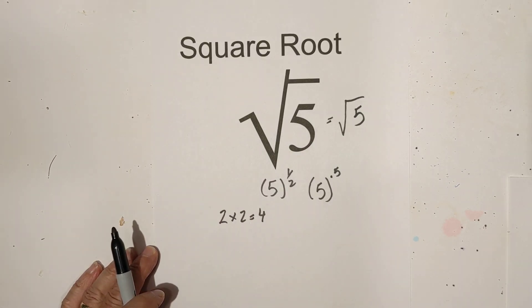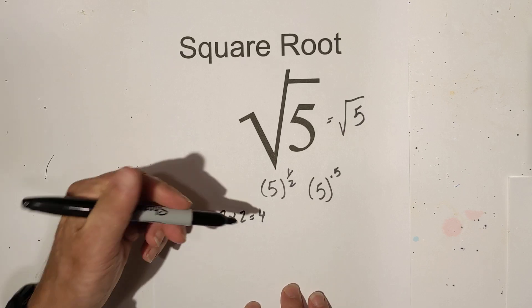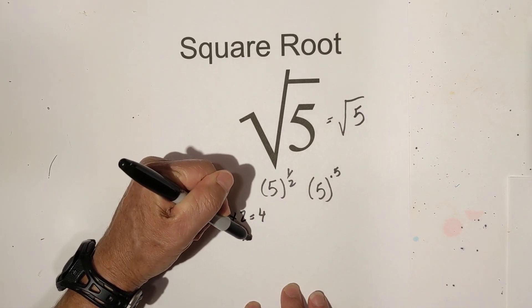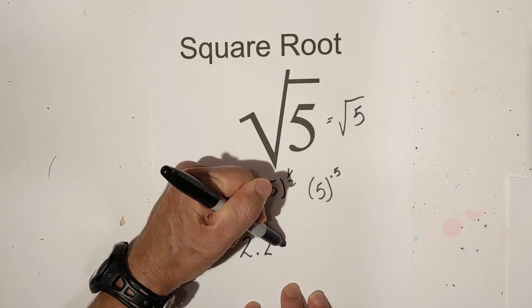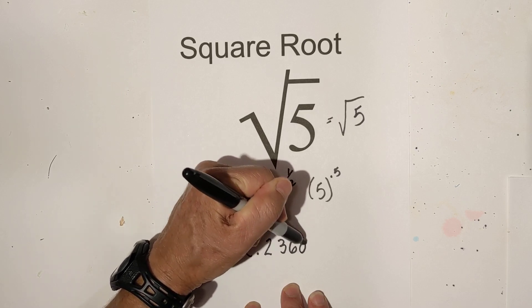What two numbers multiplied together equals 5? Well, if you want it in decimal form, and I'll go 5 places, it would be 2.23606.